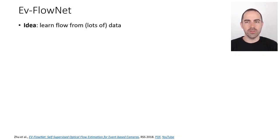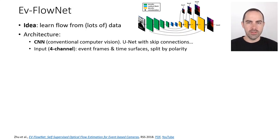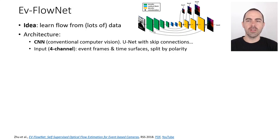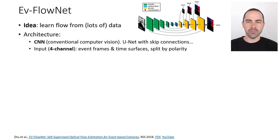The idea is to learn flow from lots of data using conventional architectures. The architecture used is a U-Net — an hourglass architecture with a bottleneck, an encoder part, a decoder part, and multi-resolution stages with skip connections. The error with respect to ground truth flow is computed at different resolutions and used to update all the network coefficients.